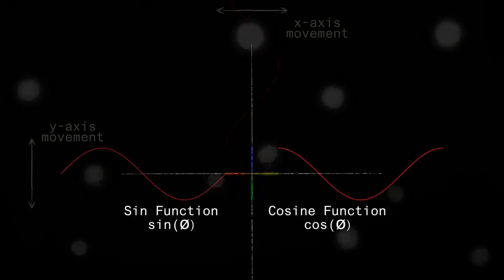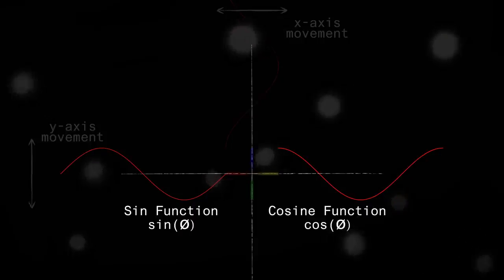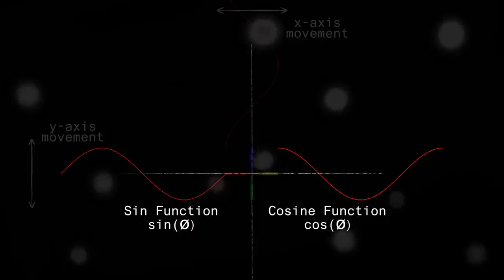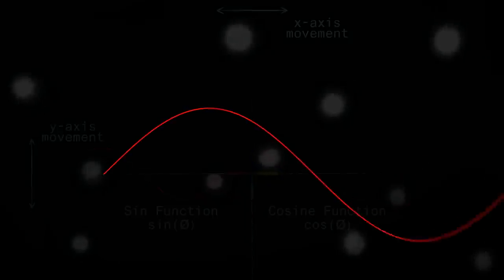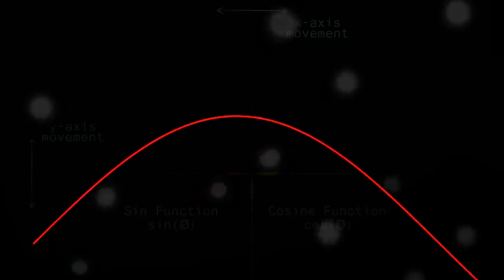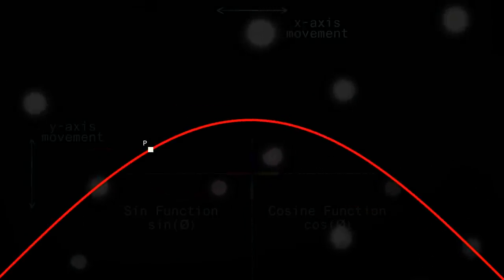The sine function plots the vertical position of the point of interest, and the cosine function plots the horizontal position of the point of interest. The derivative is the instantaneous rate of change, or slope, of a function at a point of interest.